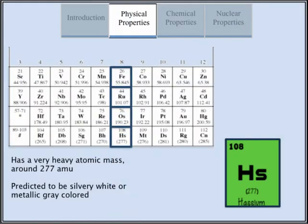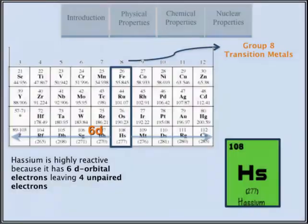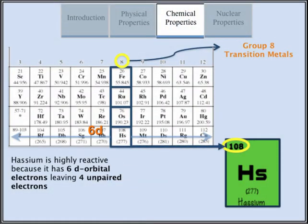Hasium has an atomic number of 108. It has one of the highest atomic masses of all the elements, which can be attributed to the lanthanide contraction. Based on its position on the periodic table, hasium is expected to have chemical properties similar to those of osmium. They share similar atomic radii, ionization potentials, and orbital energies.